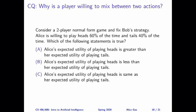The first question is about why a player would be willing to mix between two actions. Consider any two-player normal form game and fix Bob's strategy. Suppose Alice is willing to mix between playing heads and playing tails with some probability — which statement is true? I already discussed this in the previous video. If Alice is willing to mix between two actions and play either with positive probability, that must mean both actions give her the same expected utility. If one action gives her strictly better expected utility than the other, she would not play the worse action at all — she should always play the better action.